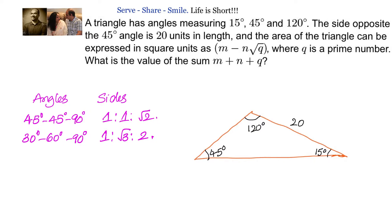To get 15 degrees into a known angle, I observe that 45 minus 15 is 30 degrees, and 180 minus 120 is 60 degrees. If I can extend the figure to get 30 and 60 degrees, or make it into an isosceles right angle triangle, we should be able to solve the problem.